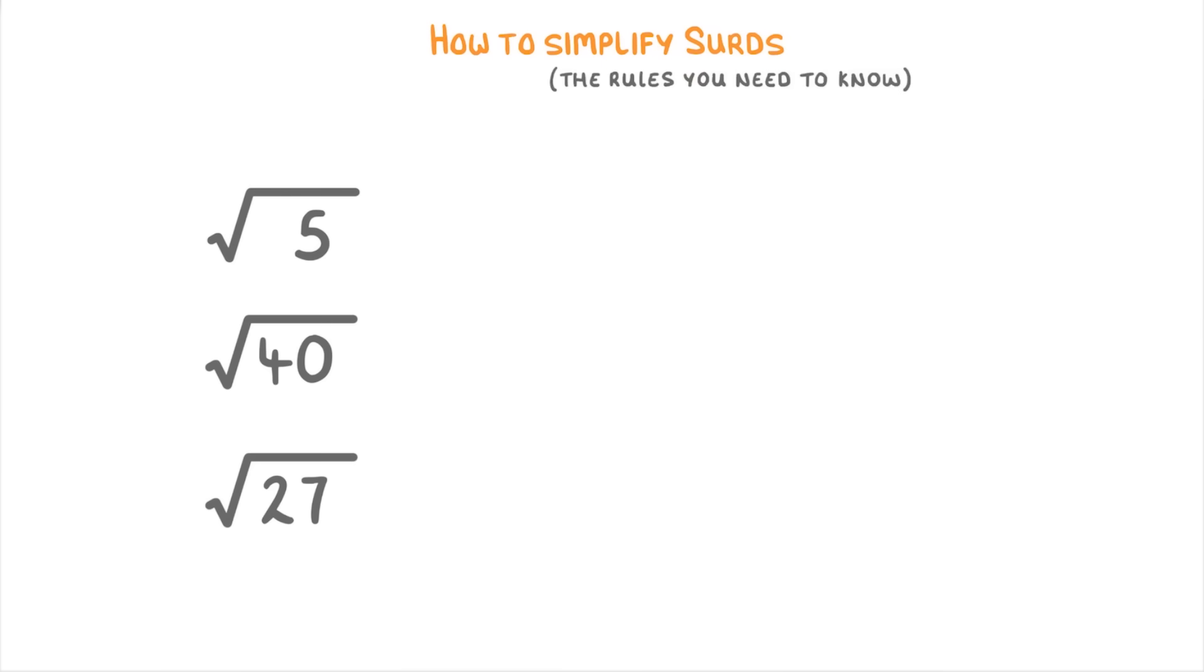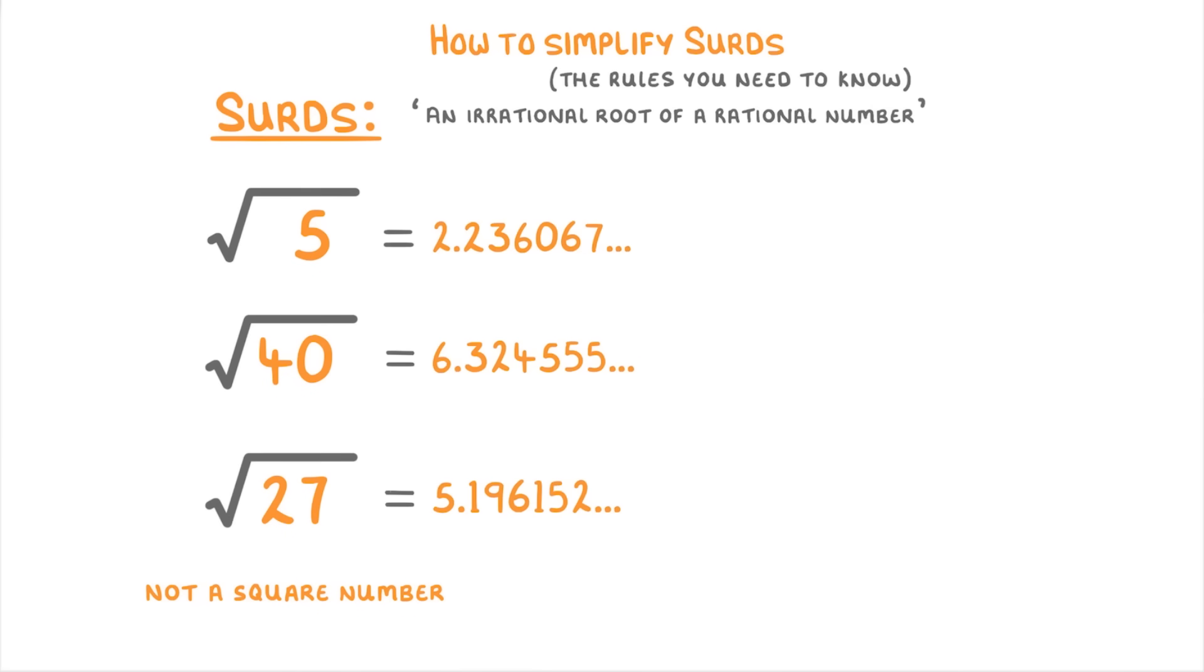In technical terms, a surd is an irrational root of a rational number, but all this really means is that they have a square root sign where the number inside can't be easily square rooted because it's not a square number. So all of these terms here are surds because 5, 40, and 27 aren't square numbers. This means if you put any of these into your calculator you would get an answer with loads of decimal places which would theoretically go on forever.